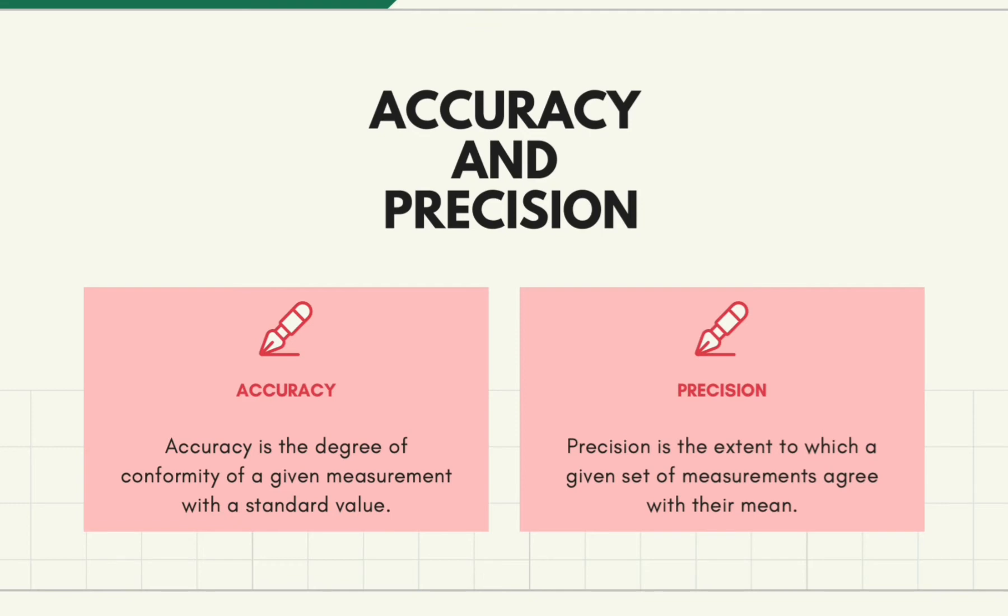In measuring, accuracy and precision must be observed. But what is accuracy and what is precision? Accuracy is the degree of conformity of a given measurement with a standard value, while precision is the extent to which a given set of measurements agree with their mean. Accuracy and precision are two different yet equally important surveying concepts.